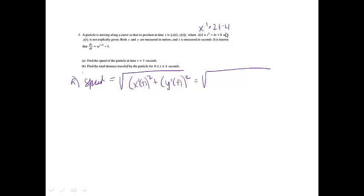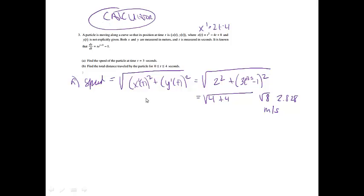And if we're dealing at time t equals 3, this will be 2. So this is going to be 2 squared plus the derivative of y at 3. So we're going to get 3e^(3-3) minus 1 squared. That gives me 4 plus 4, which equals the square root of 8, which gives me 2.828 meters per second. I did not use my calculator on this one. This is a calculator problem because it was a 2010 problem, so you were allowed to use your calculator on number 3. That would have been worth just one point.